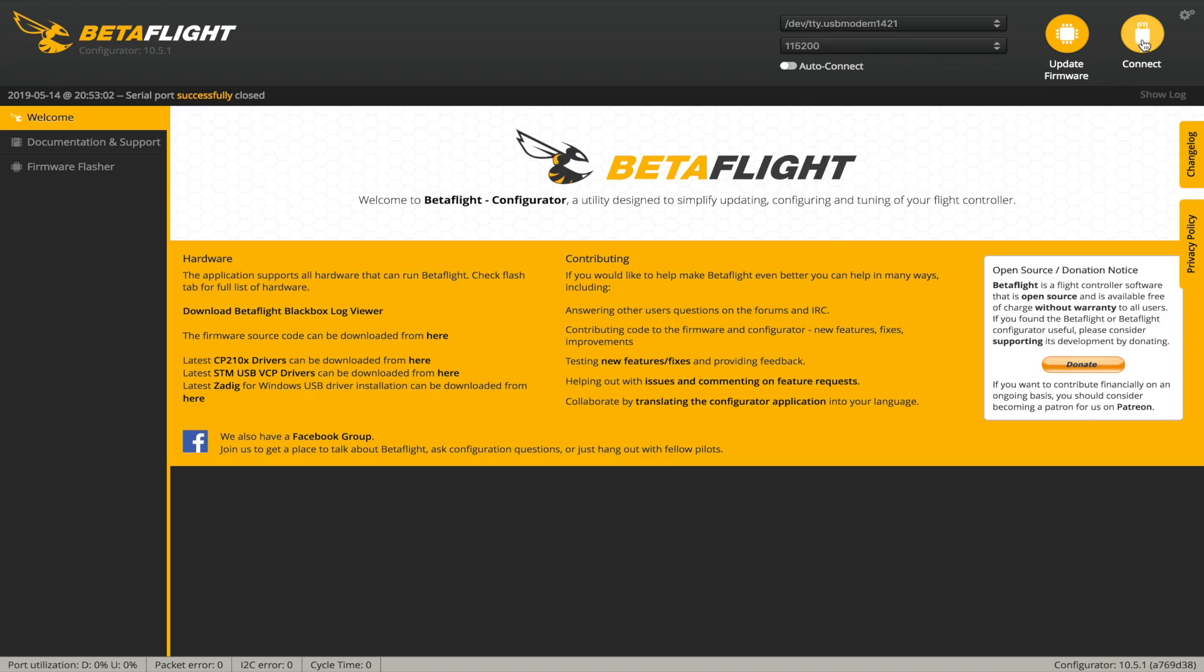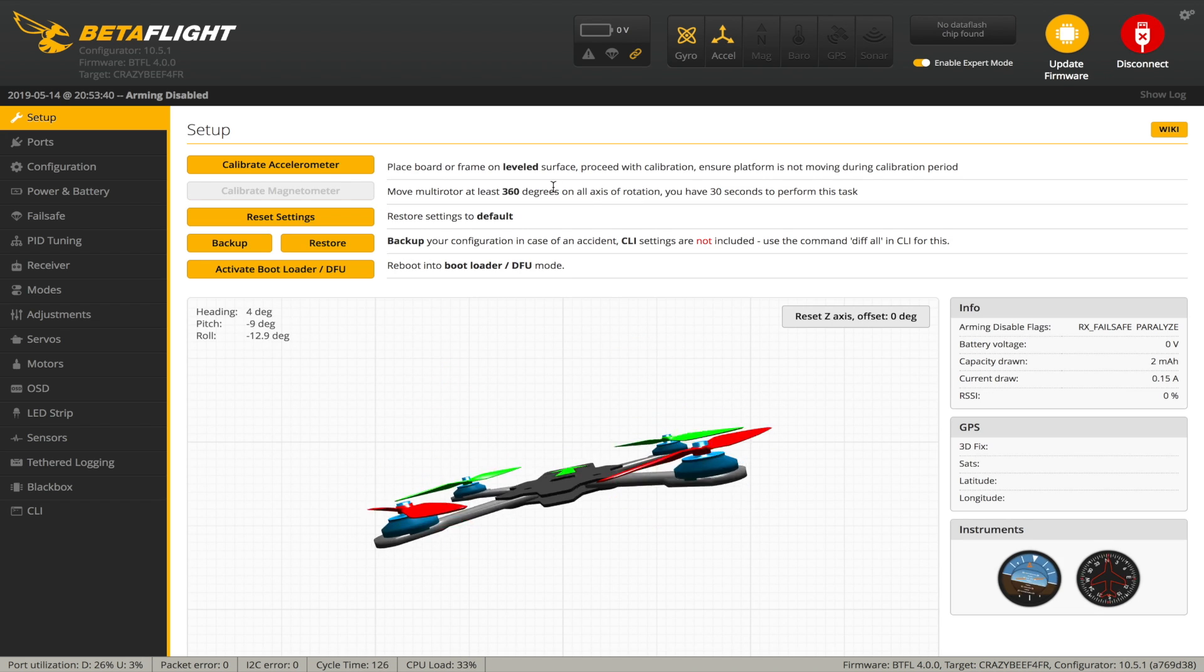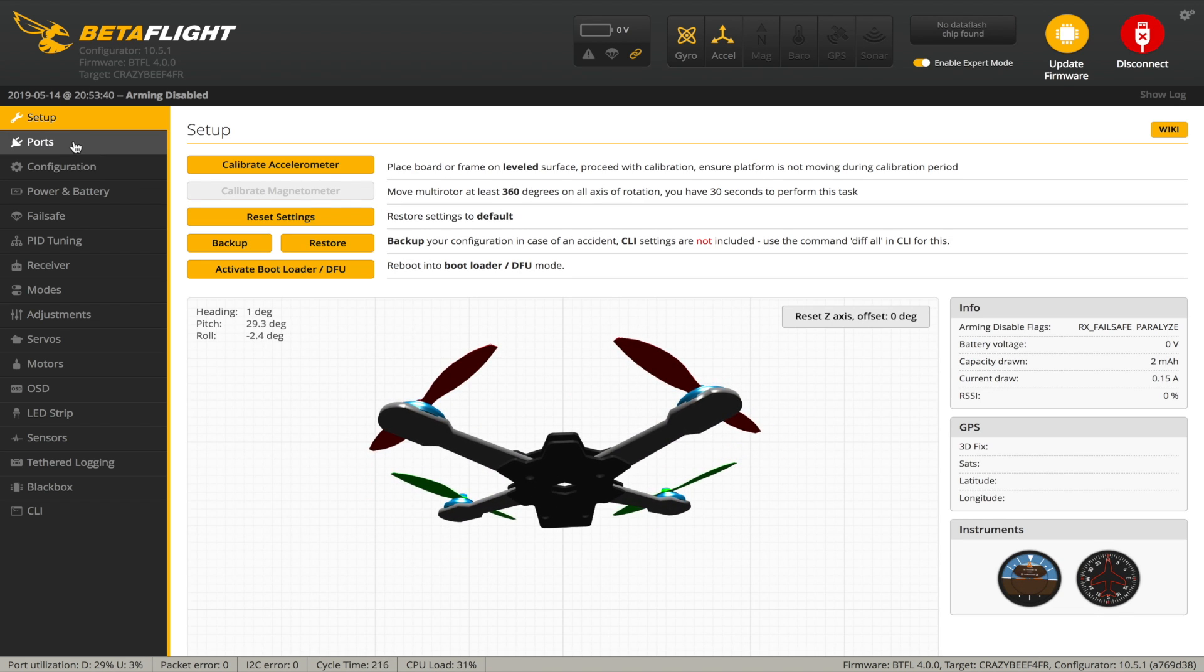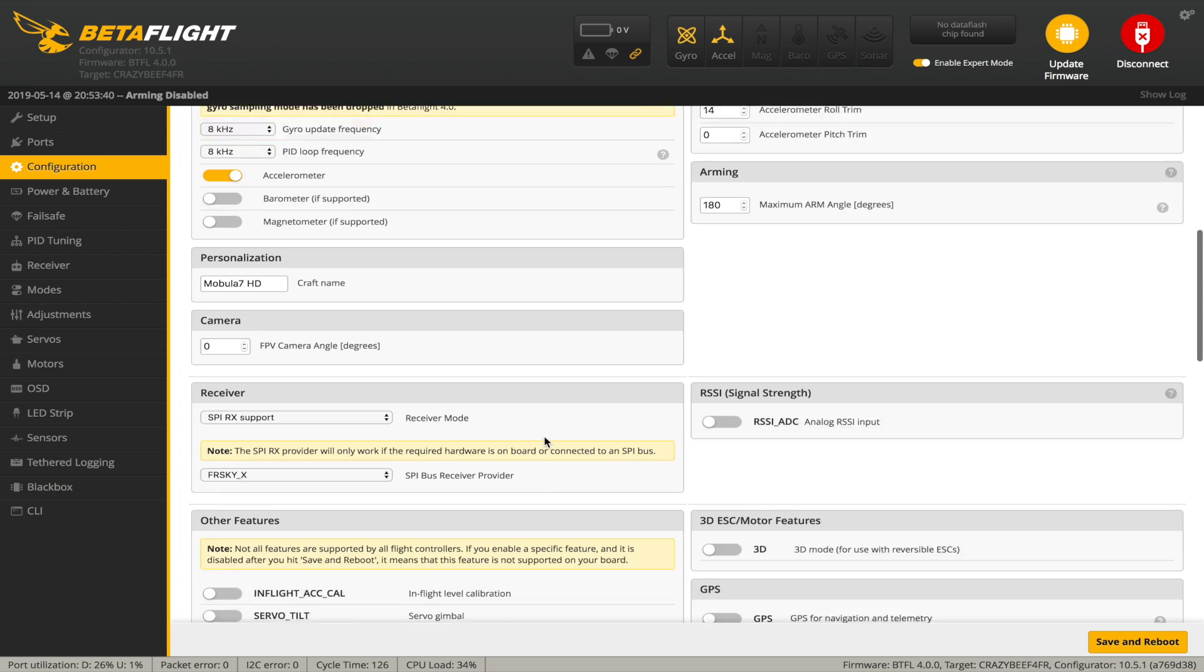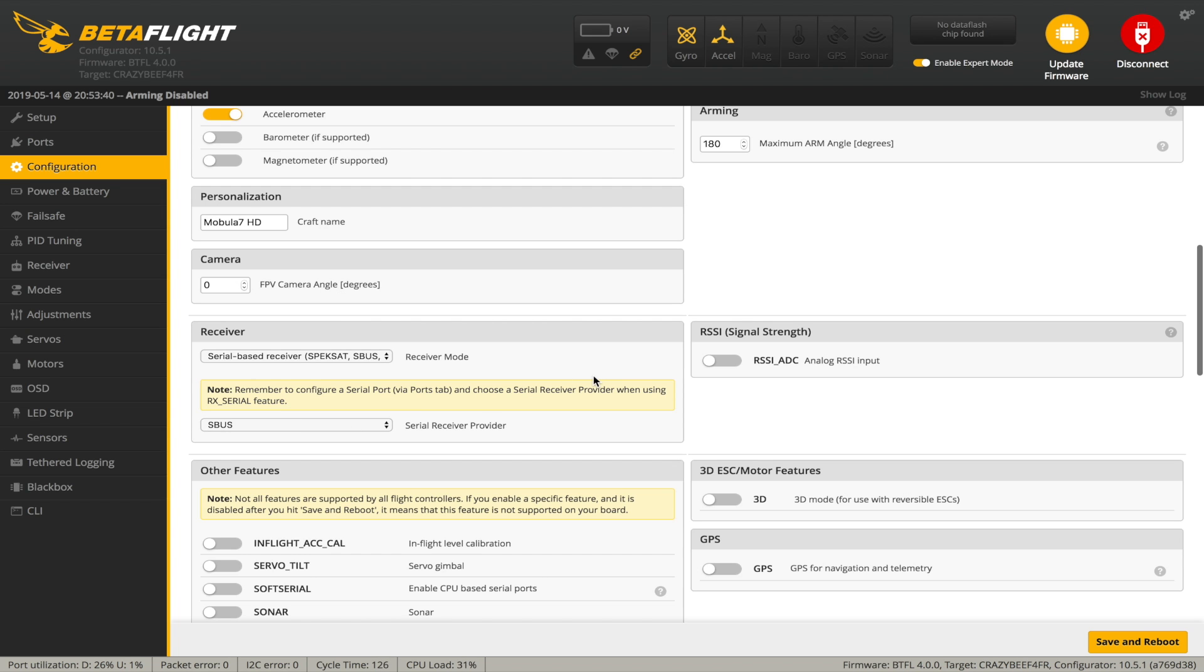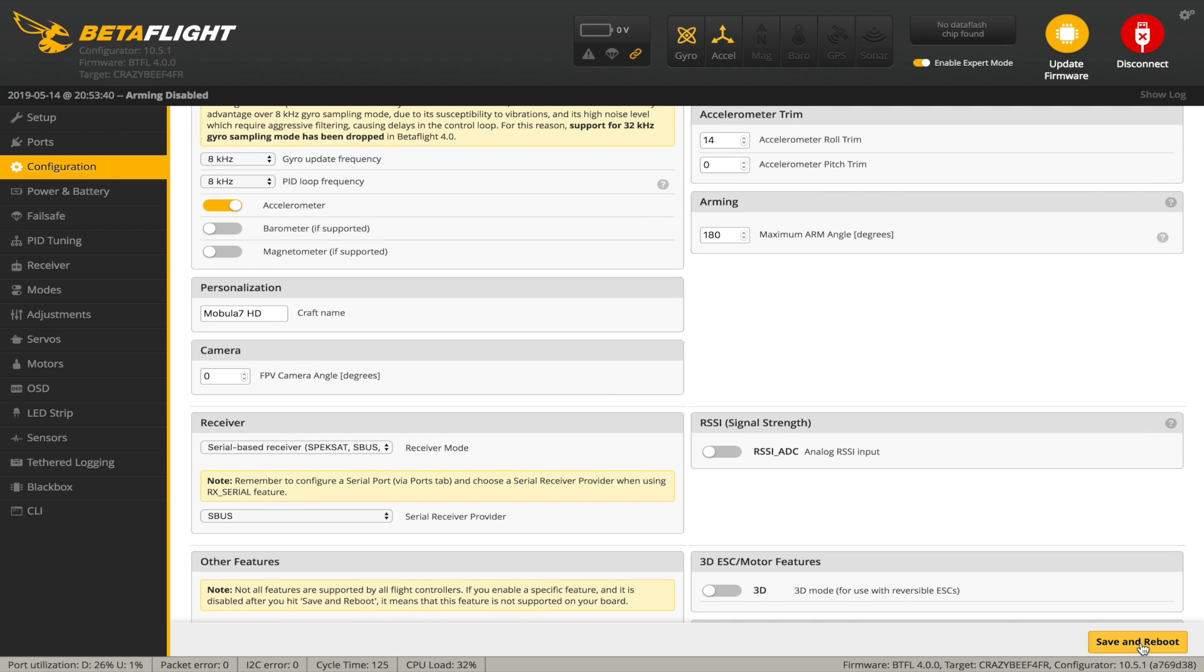So we've got our quad connected to our computer. Let's check it's working. I've got my transmitter on. Ports, these are all the same. Now the thing you're going to have to change is in configuration. Out of the box, the receiver will be SPI-RX support and it will either be FRSky-X or probably FRSky-D. Now because we've got an external receiver now that's just a simple FRSky XM+, we need to change that to serial based and SBUS. As simple as that. So let's do a save and reboot.